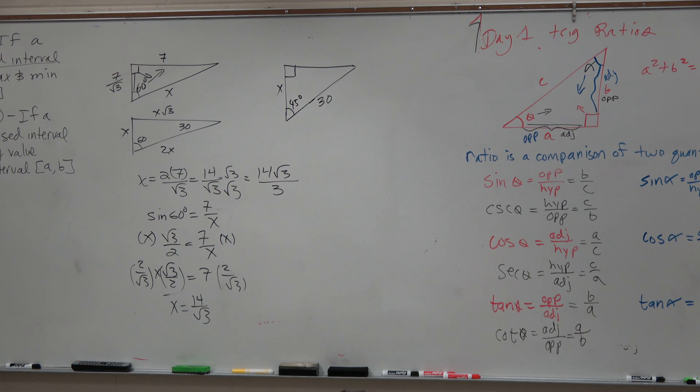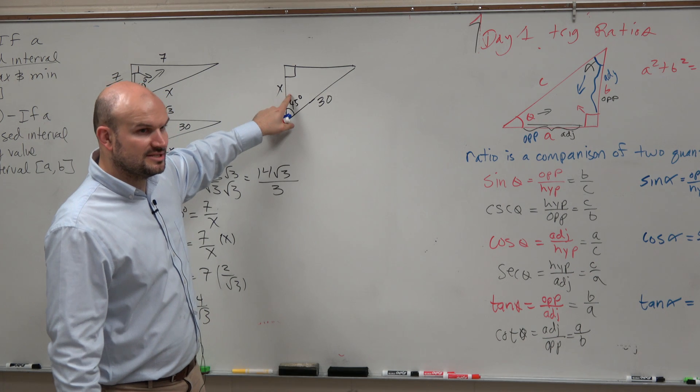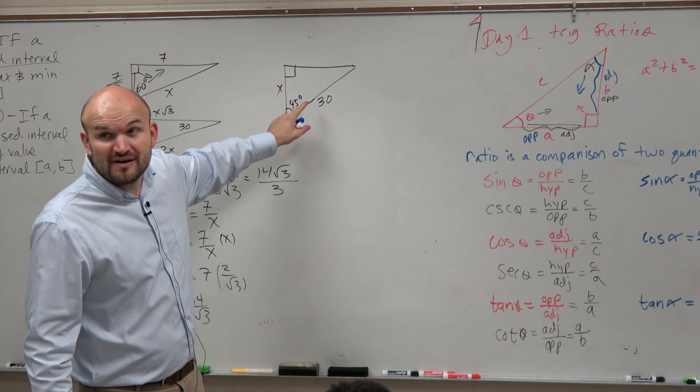Because the other example should be a little bit easier. Now, this example. So again, going back to if we have the hypotenuse, can we figure out what the adjacent side is? Like again, this is a 45-45-90, right?